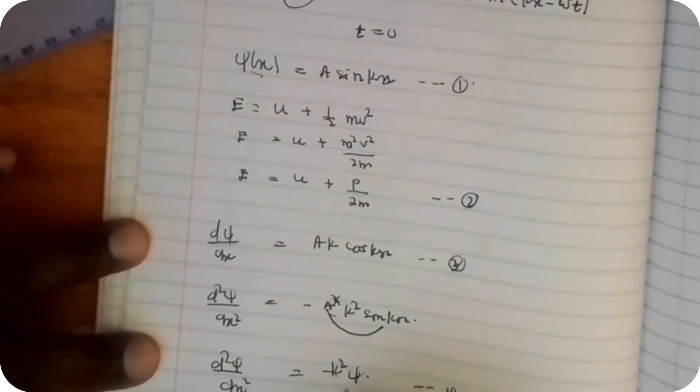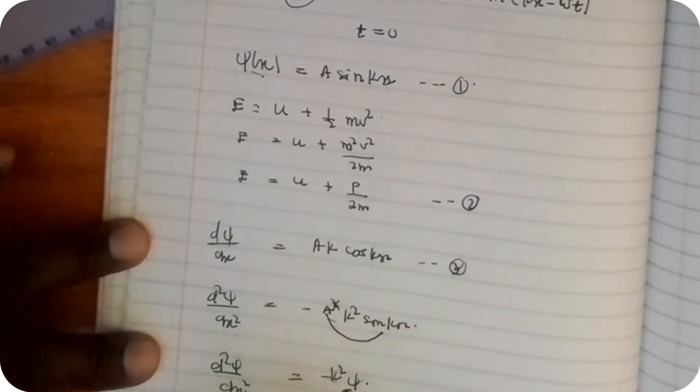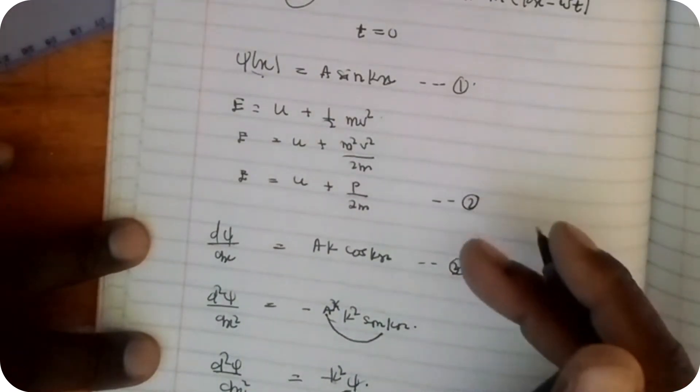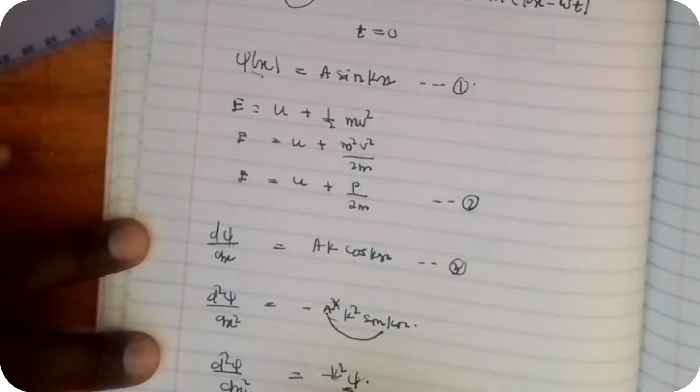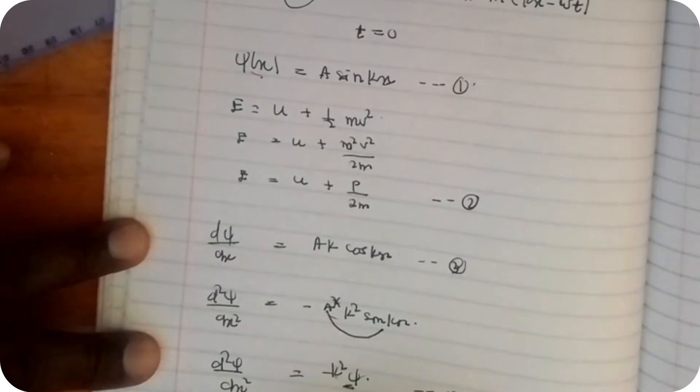Since there is a ψ here and a ψ here in our differential equation, let's also introduce ψ in equation number 2. Equation number 2 was E equals U plus p²/2m.